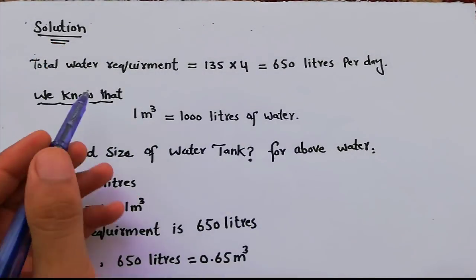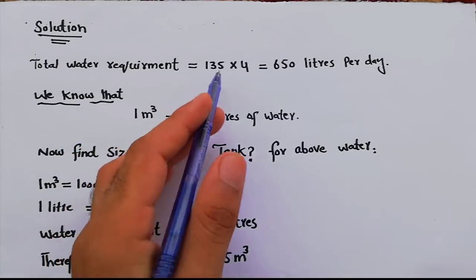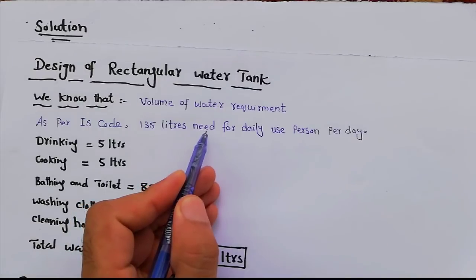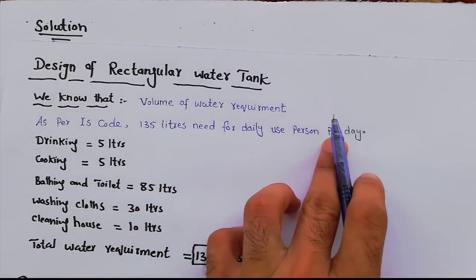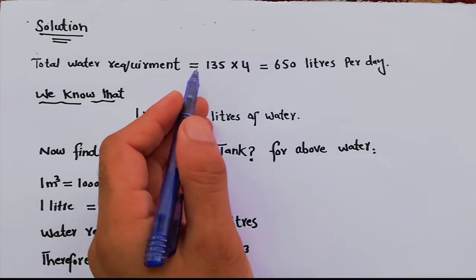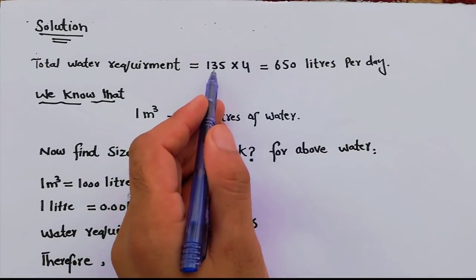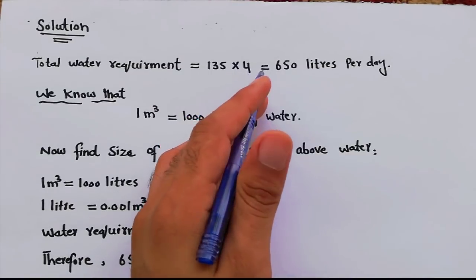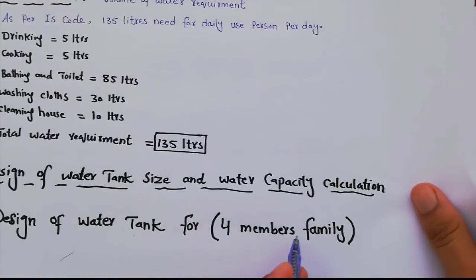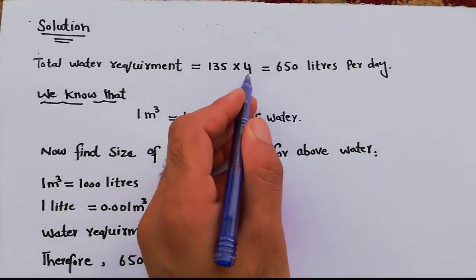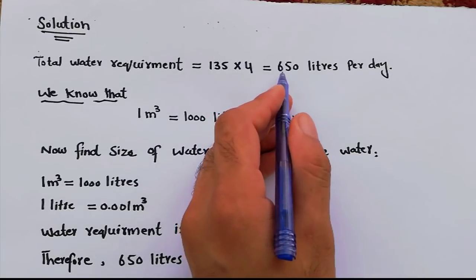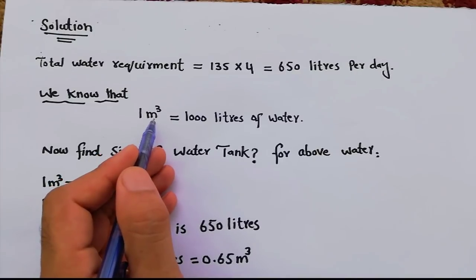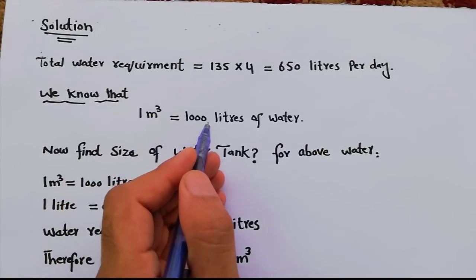The solution: total water requirement will be 135 liters per person per day, multiplied by four members, which equals 650 liters per day water requirement for a four-member family.